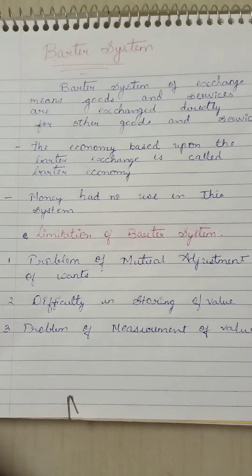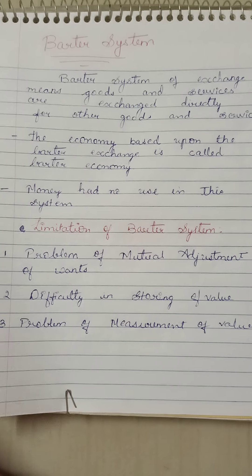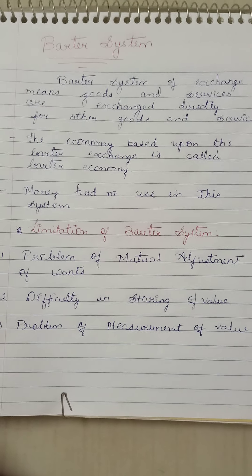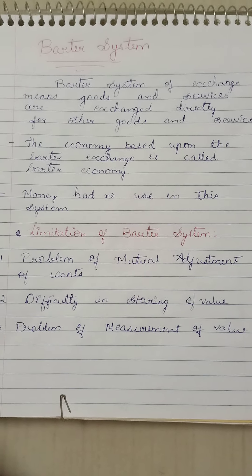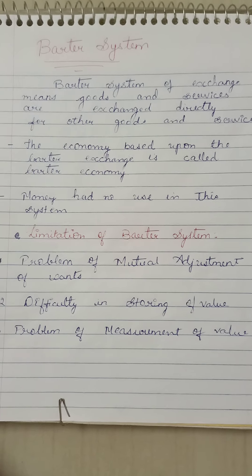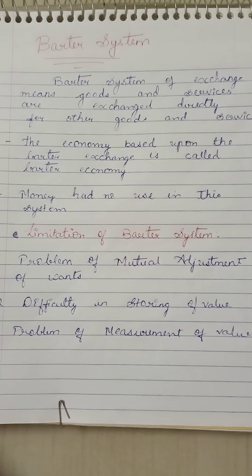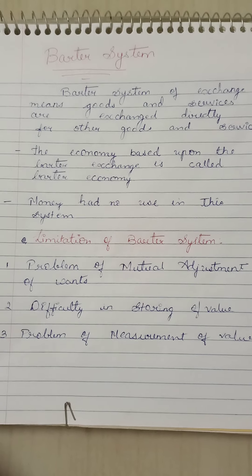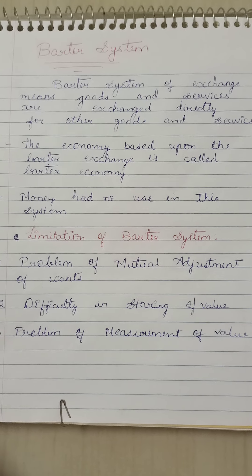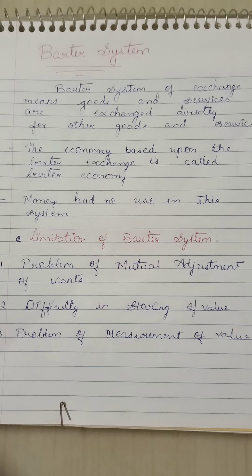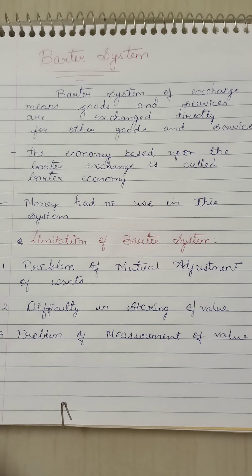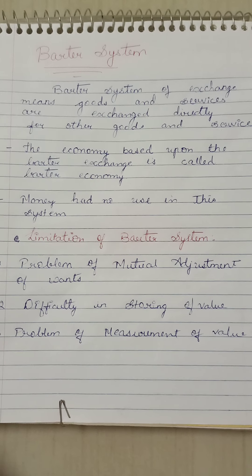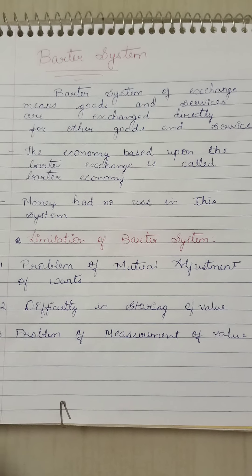The barter system occurred during the primitive phases of human civilization, in which life was very simple and easy, and man was self-sufficient. But with the day-by-day progress of civilization, division of labor, and large-scale production, this barter system came to an end. It was no longer effective due to increasing population, wide labor divisions, and unlimited wants — because of all this, the barter system came to a limitation and end.